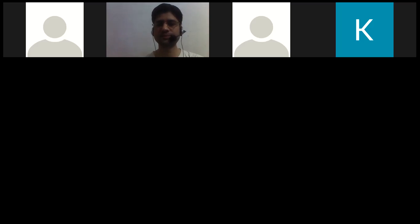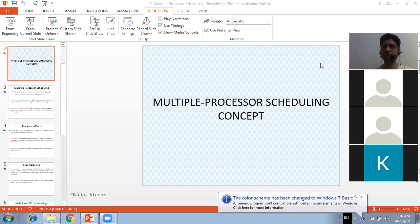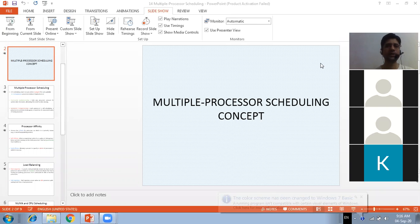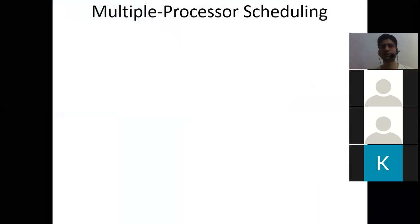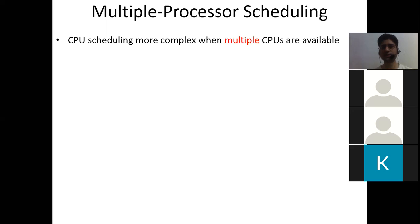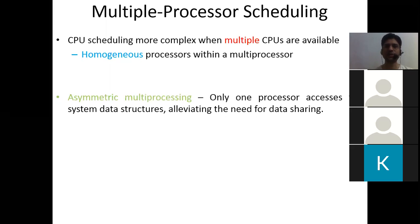Let's start with the multiprocessor scheduling concept. CPU scheduling is more complex when multiple CPUs are available. We first schedule processes in a single processor ready queue and then schedule among those processors. If there are homogeneous processors within a multiprocessor, we can have multiple processor scheduling, and it is of two types.